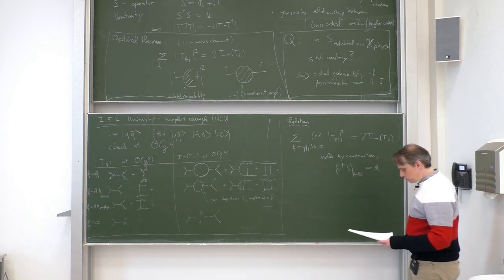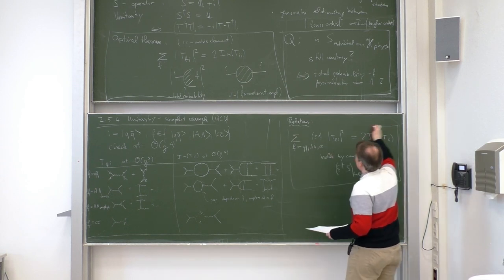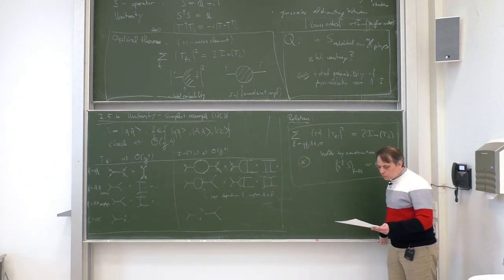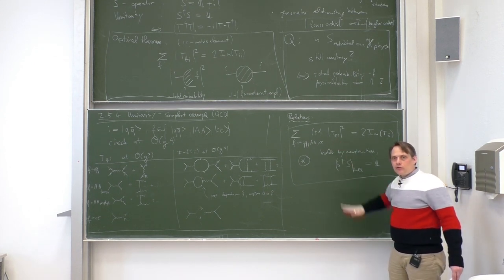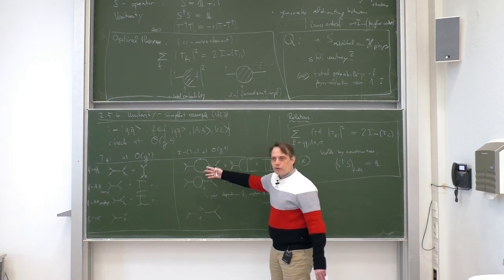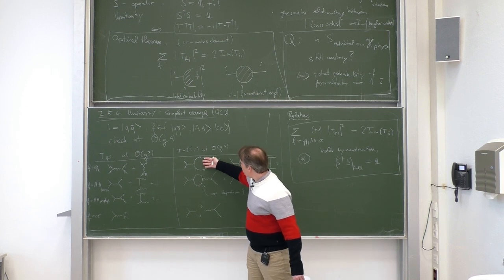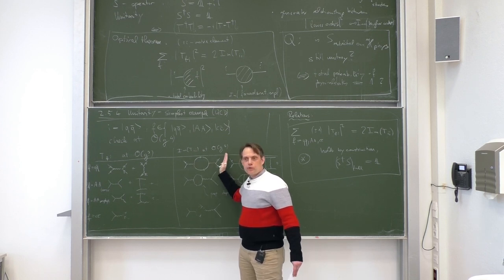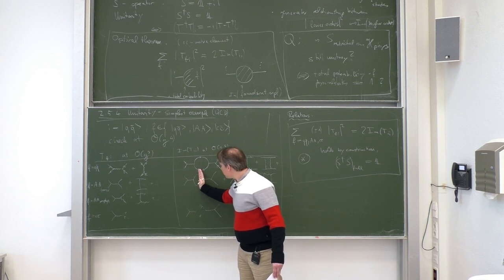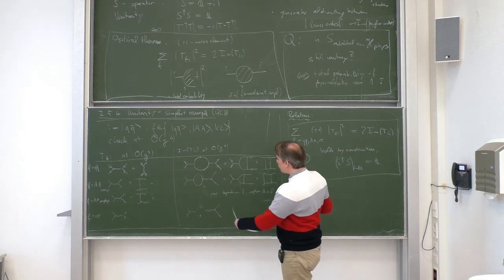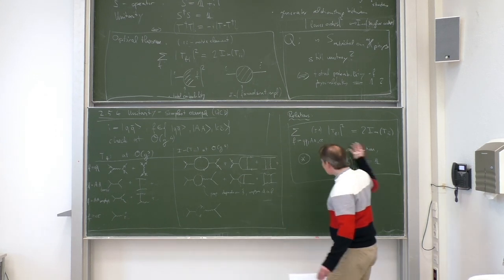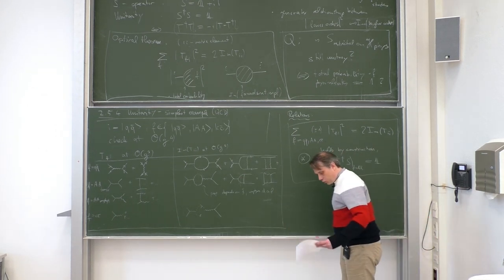Let us call this equation (★) — our basis equation, which we know holds. Technically, one can understand how it holds through this visualization: the imaginary part of each loop diagram corresponds to a combination of tree-level diagrams to the left and right of the red cut. Because of this diagrammatic correspondence between imaginary parts and tree-level diagrams, the relation is immediately valid.